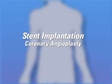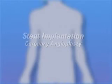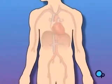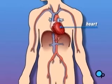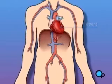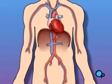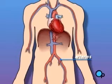Your doctor has recommended that you undergo a balloon angioplasty with a stent implant, but what does that actually mean? The heart is located in the center of the chest. Its job is to keep blood continually circulating throughout the body. The blood vessels that supply the body with oxygen-rich blood are called arteries. The arteries that supply blood to the heart muscle itself are called coronary arteries.